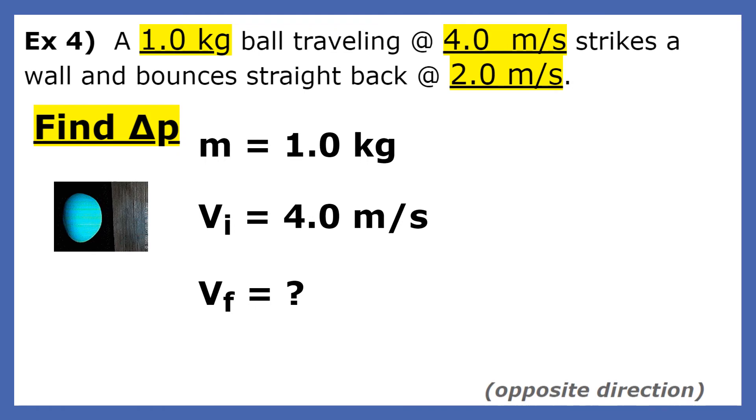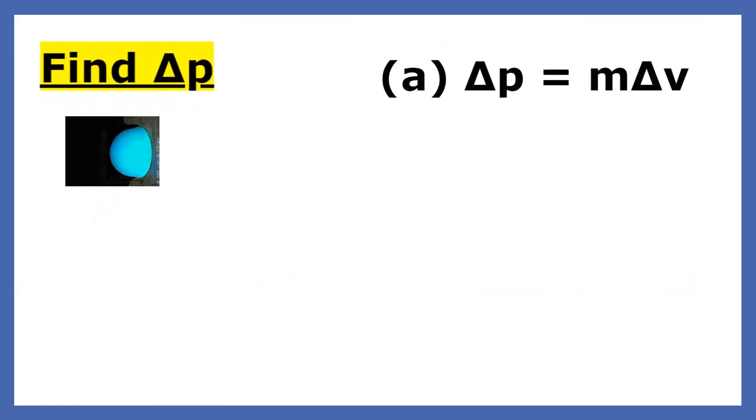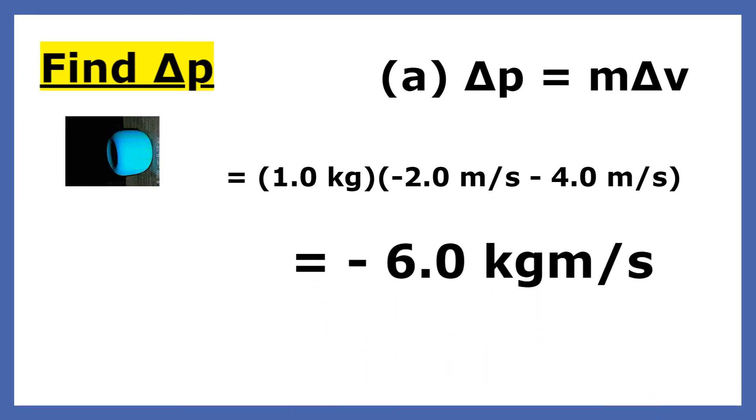Since the ball bounces straight back, the second velocity is negative and the final velocity is negative two meters per second. Since the second velocity is negative, the change in velocity can be found by subtracting four from negative two. So negative two minus four is negative six, which is the change in v, multiplied by the mass, which is one, and you get negative six kilogram meters per second.